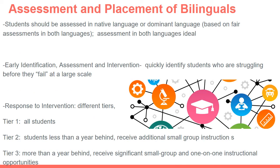Let's talk about the assessment and placement of bilinguals — best practices for how bilinguals should be assessed for special education services. First, when bilingual students are assessed for special education or gifted and talented programs, they must ideally be assessed in their first language, their native language, or whichever language they are dominant in. The most effective approach is to test bilinguals in both languages — their native language and English — so abilities in both languages are utilized to see whether students qualify for special education services.